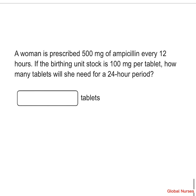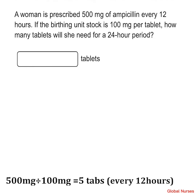Next question: a woman is prescribed 500 mg of ampicillin every 12 hours. The birthing unit stock is 100 mg per tablet. How many tablets would she need for a 24-hour period? The prescribed dosage is 500 mg every 12 hours and the stock is 100 mg per tablet. Using the basic formula, 500 divided by 100 gives five tablets per 12-hour dose.